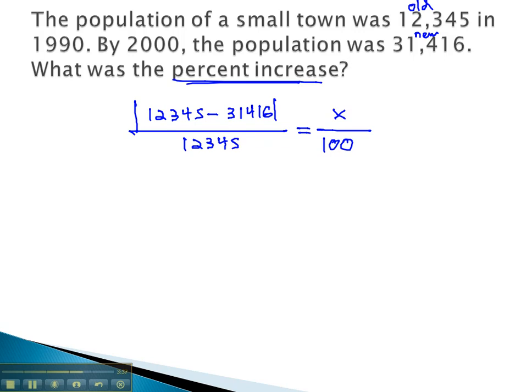Again, to make this proportion easier to just do a cross multiply, we're going to find out what the absolute value is when we take 12,345 subtract 31,416, we get negative 19,071.